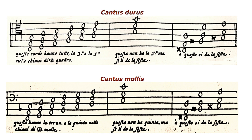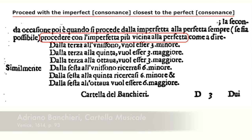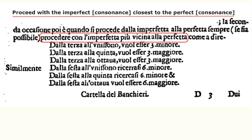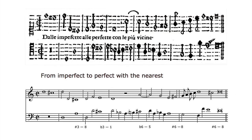Major 6 must be played on bass notes descending a step if that 6 is moving to an octave. In the treatises, the decisive rule concerning the use of accidentals is formulated as follows: one must proceed from an imperfect consonance to a perfect consonance by means of the nearest.